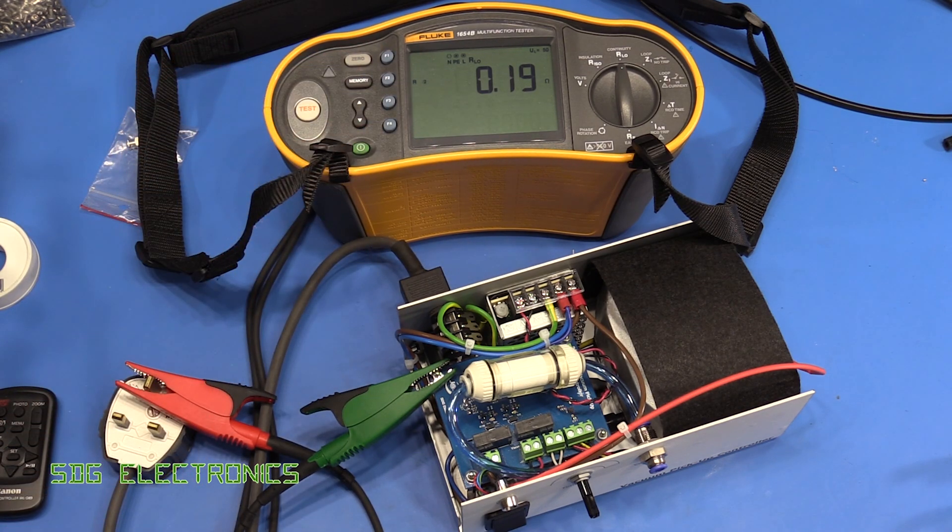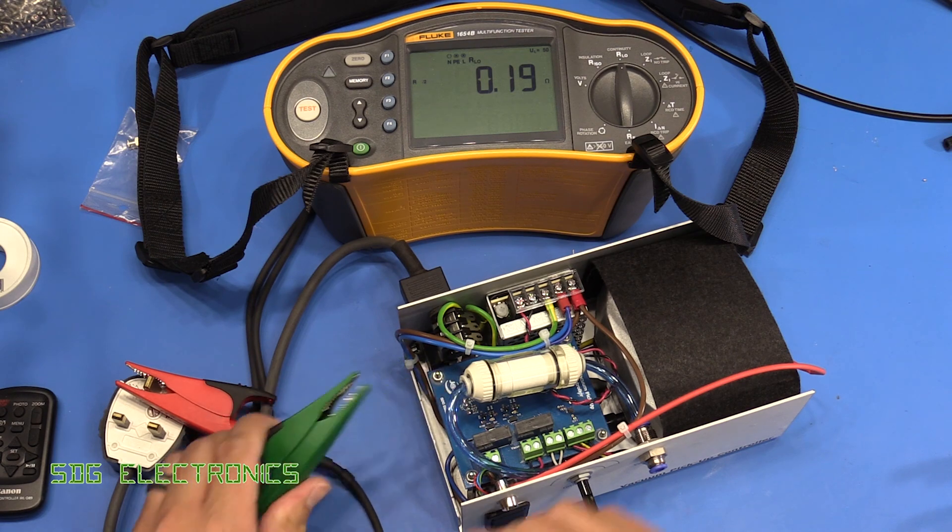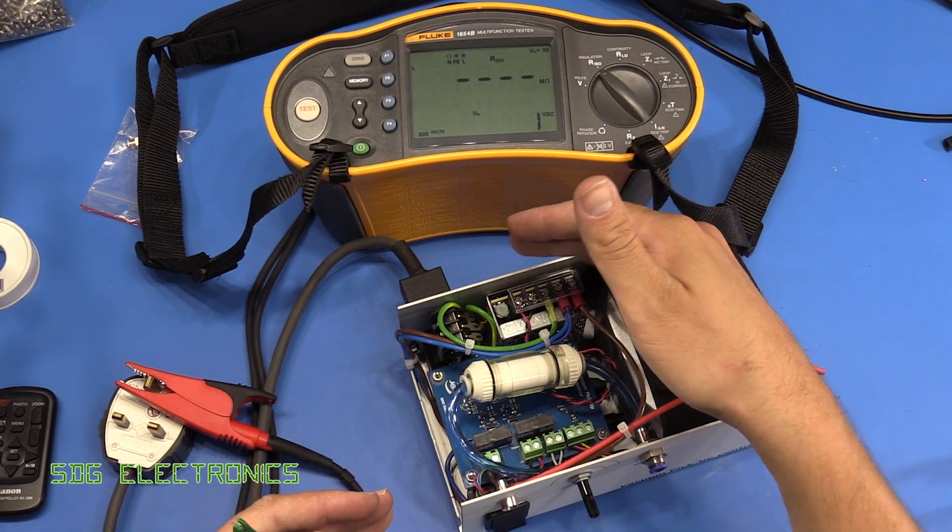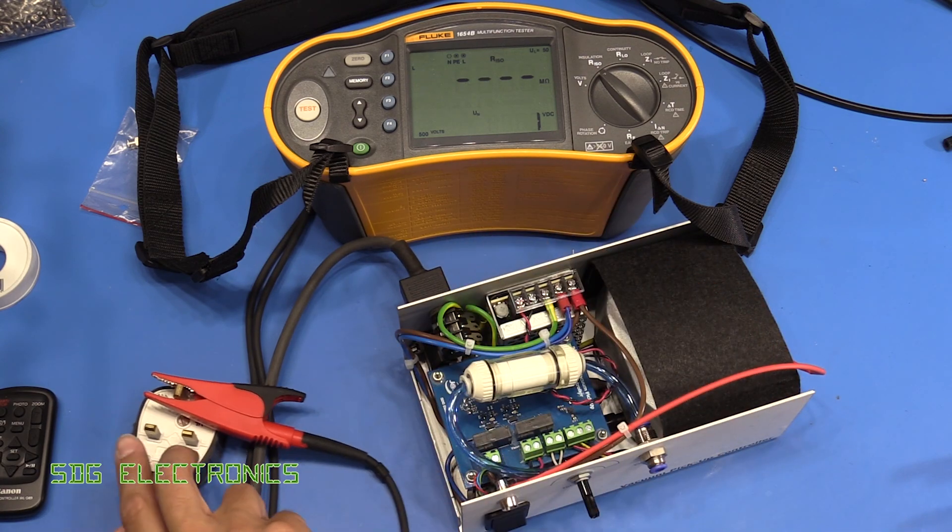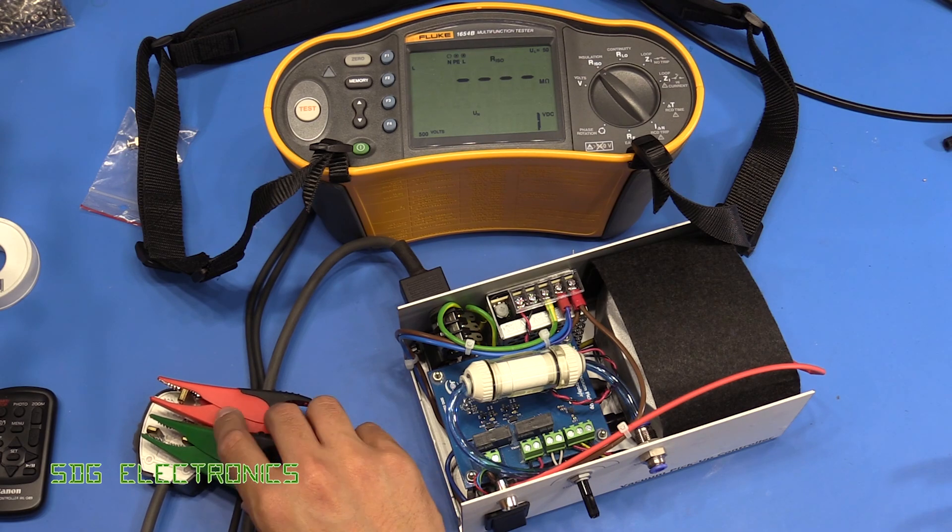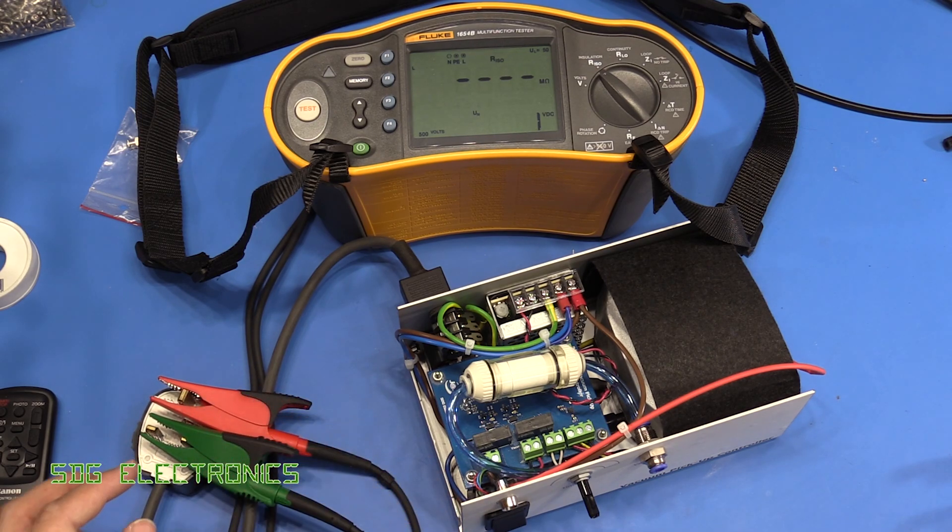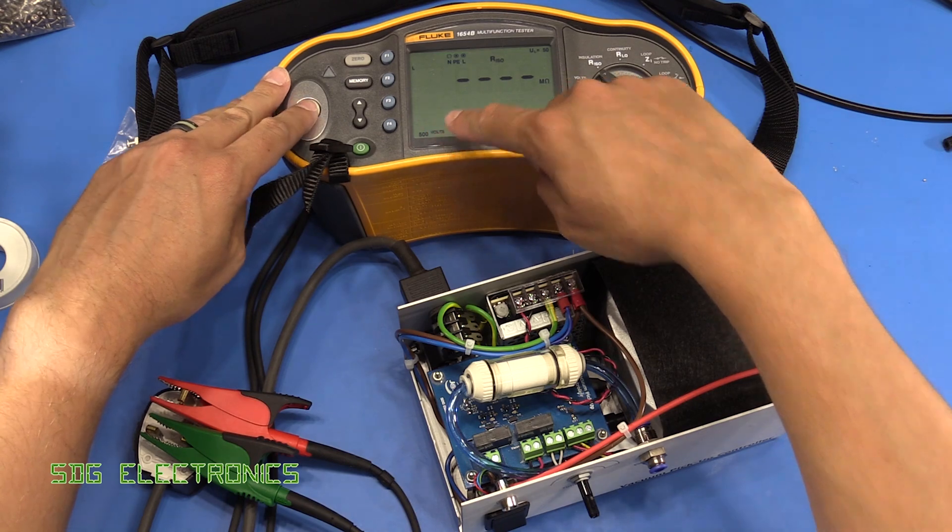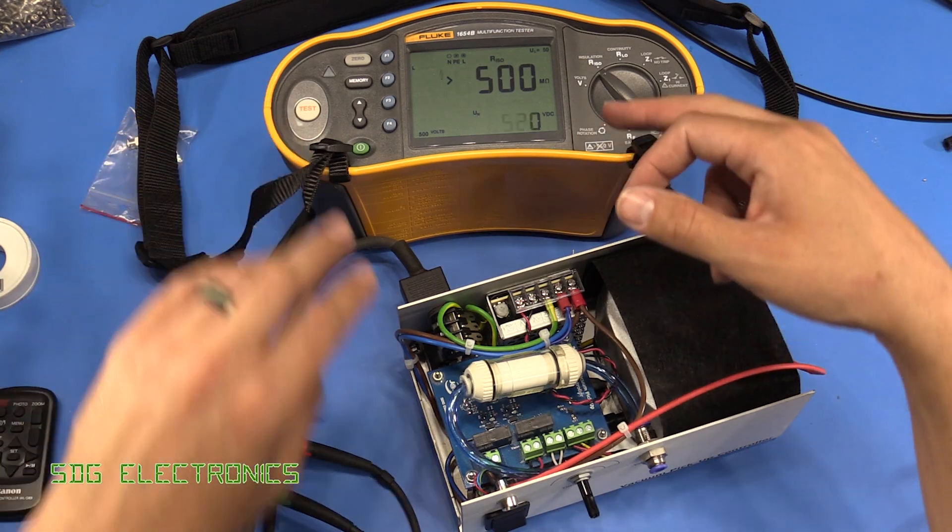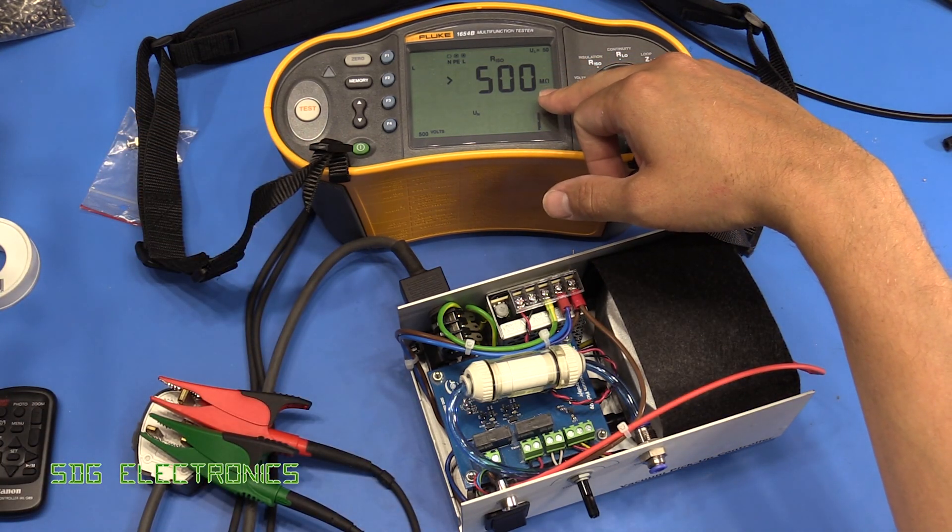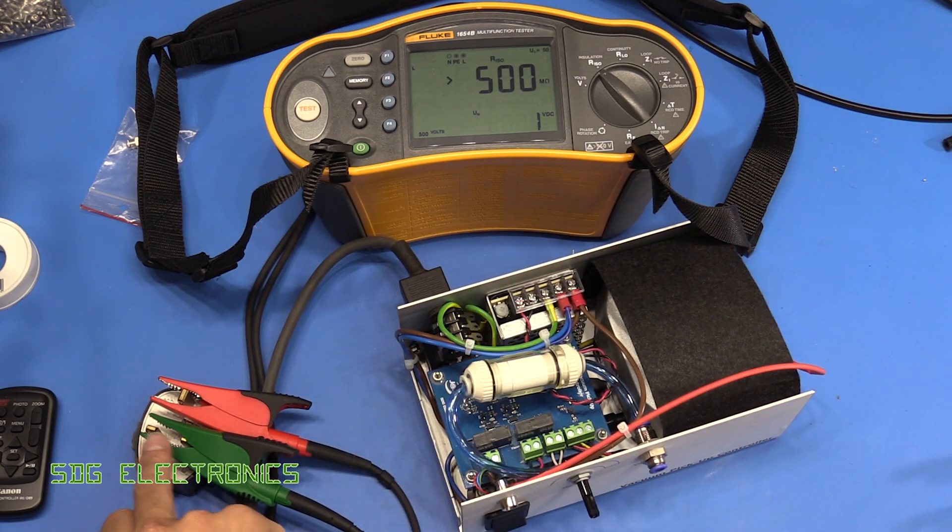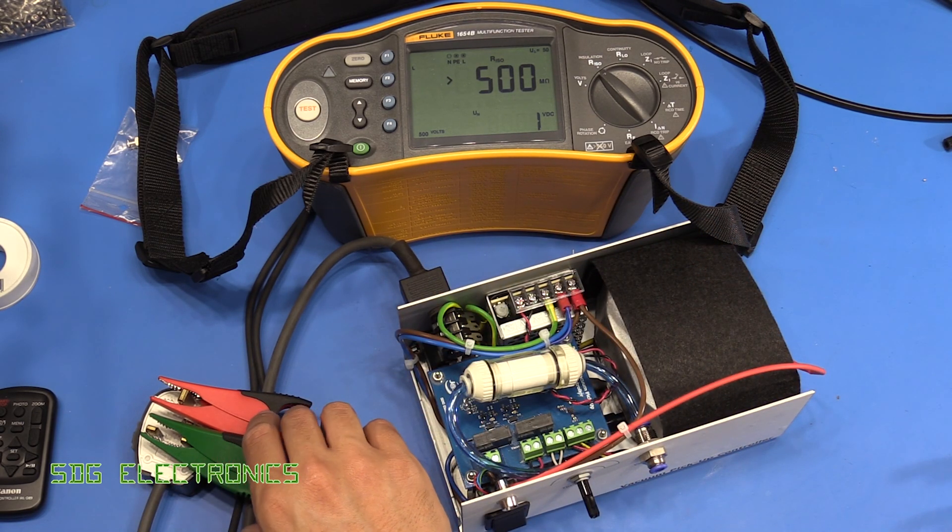And then we can do a test for insulation resistance and that's making sure that we've got insulation between mains earth and either of the two line conductors. So if I put this across the two terminals here, that's just about touching here and what we'll do is apply 500 volts and you can see it's unable to measure the impedance basically, which means that we've got an open circuit between mains earth and the phase and neutral conductors. So that's good.